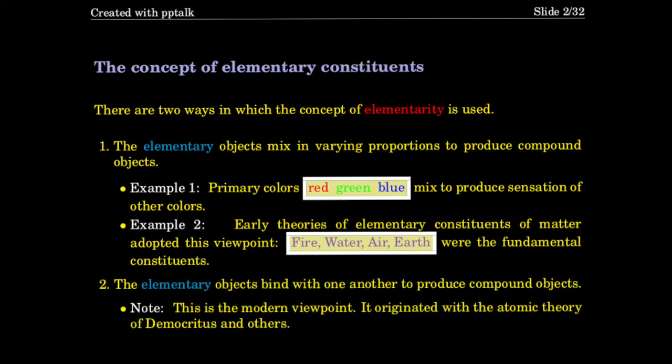The second concept of elementarity is that elementary objects bind with one another to produce compound objects. This second one is the modern viewpoint. It originated with the atomic theory of Democritus and others — many people claim credit — roughly 2000 years ago.